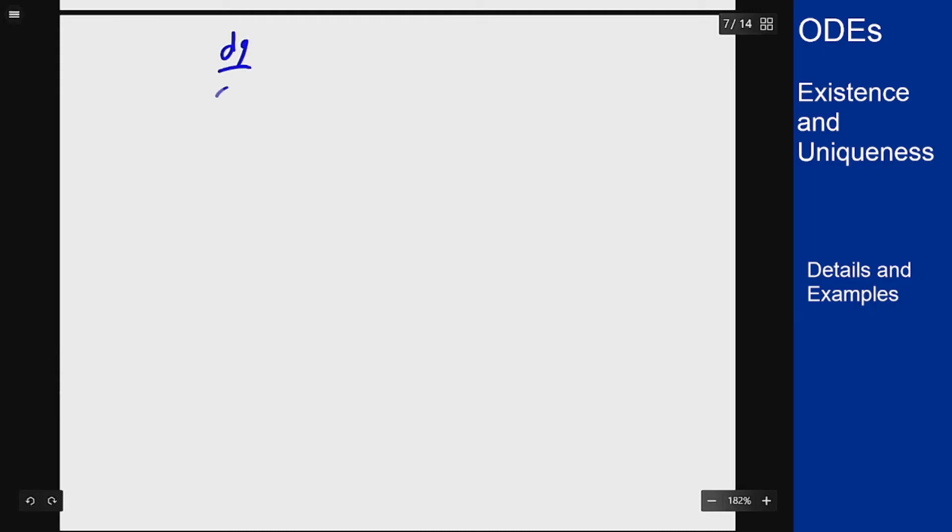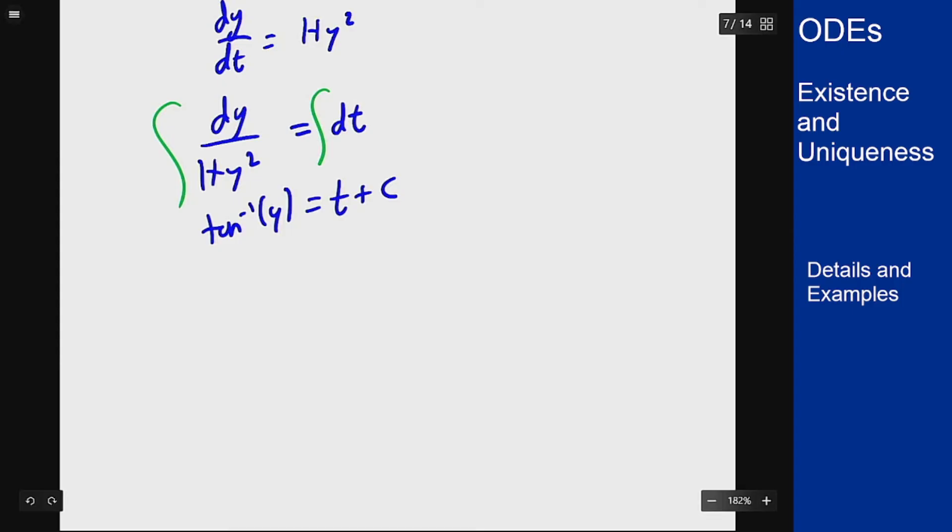So dy/dt = 1 + y². This is separable. So we get dy/(1 + y²) = dt. I can integrate both sides. Integral of dt is just t + c. Integral of 1/(1 + y²) is arctangent or tangent inverse of y, which gives my solution as y = tan(t + c).